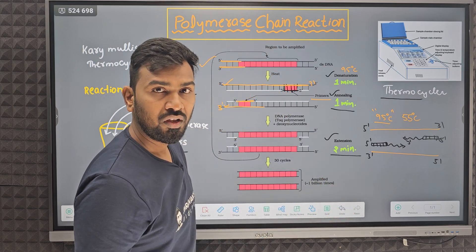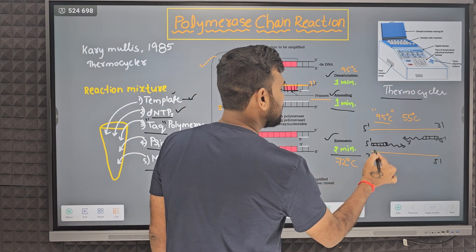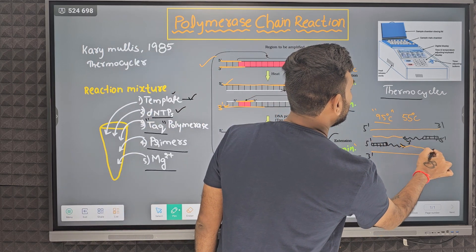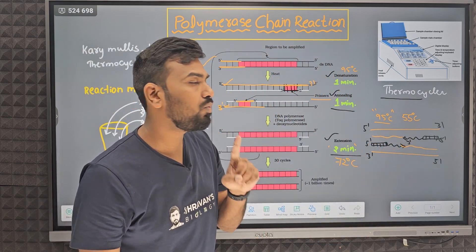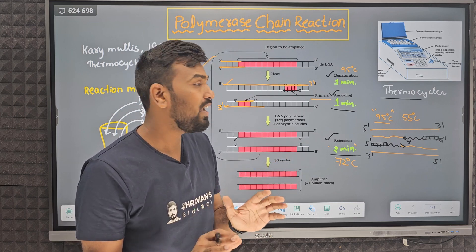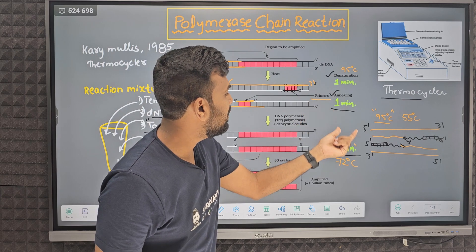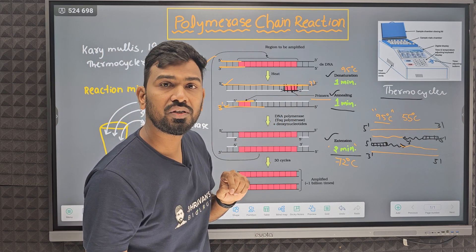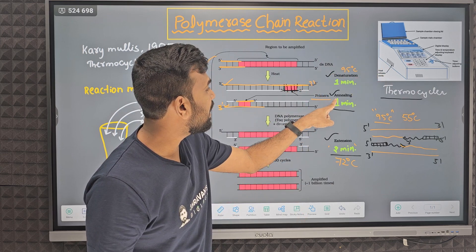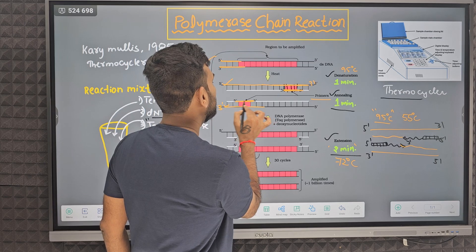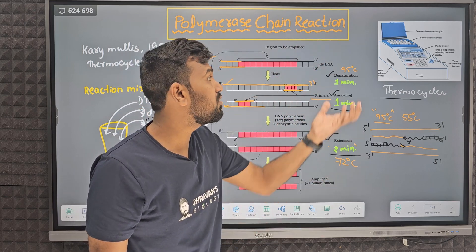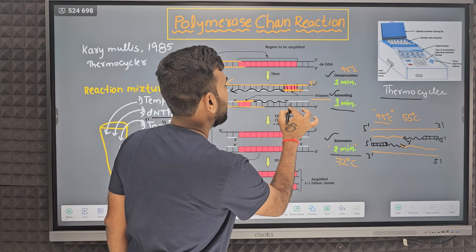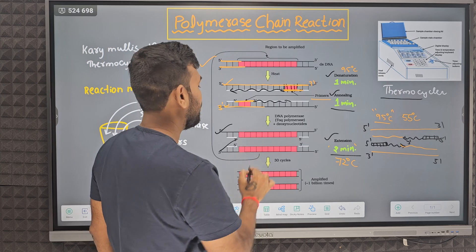Then Extension — synthesis. Taq polymerase comes in. The temperature here is approximately 72 degrees Celsius, and extension takes about 2 minutes. This is the ideal temperature for Taq polymerase activity, so your new strand is synthesized. One cycle is complete — after one cycle, from one DNA you get two DNA molecules. So to summarize: Denaturation at 95°C separates the two strands; cooling to 55°C causes primer annealing; then 72°C triggers extension where the new strand is synthesized.